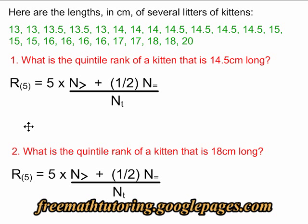When we fill in the formula, we replace N greater than with 12. There are 12 kittens that are bigger than 14.5 centimeters. We replace N equals with 4, because there are exactly 4 kittens that are 14.5 centimeters in length. And we replace NT with 24.